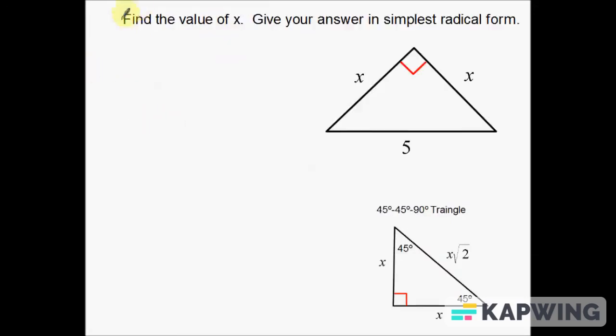The second example, okay same directions. Find the value of x, give your answer in simplest radical form. So here is our second triangle, our second example here. In this case we know what the hypotenuse is, hypotenuse right here. And we're going backwards to one of the legs.